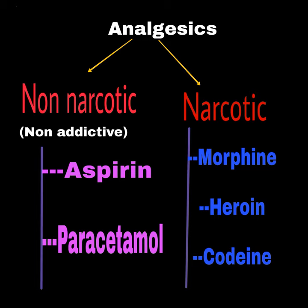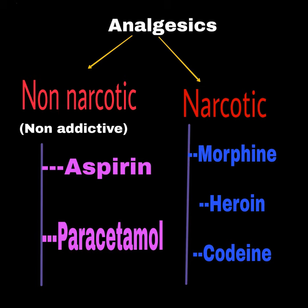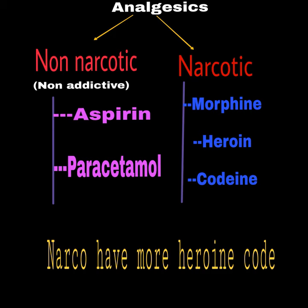Narcotic examples are morphine, heroin, and codeine. The mnemonic to learn narcotic drugs is: 'Narco have more heroine code.' This simple line helps you remember the narcotic drug examples — morphine, heroin, and codeine.